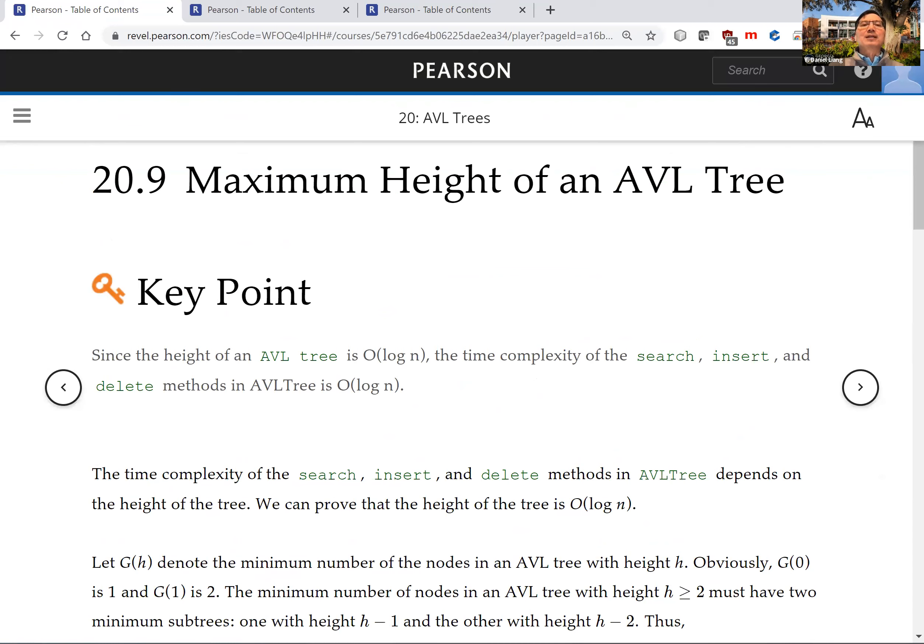That is all for this section - the maximal height of an AVL tree. And from this maximal height, we get the worst complexity, which is actually O(log n). That is all for this section. See you next time.